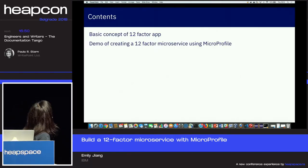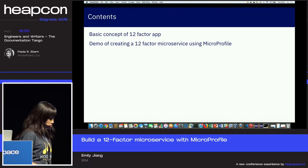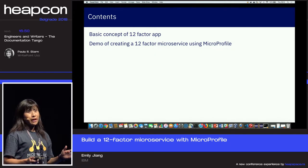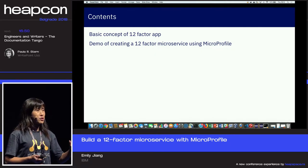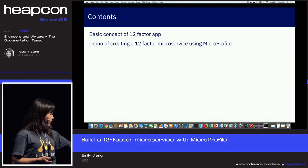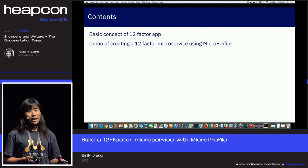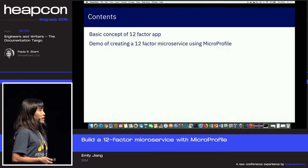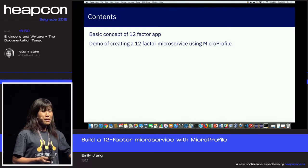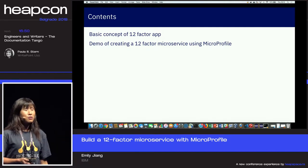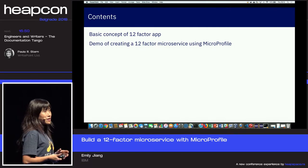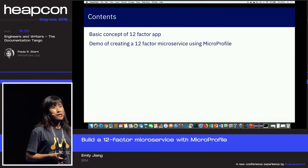Let's have a look at the 12-factor app. In this talk, the first part covers the 12-factor app methodology — explaining what it is — and the second part is a live code demo. We'll see how it goes because we only have 35 minutes. This 12-factor app will be deployed to Kubernetes, so you can see the whole service and service interaction within the same Kubernetes cluster.